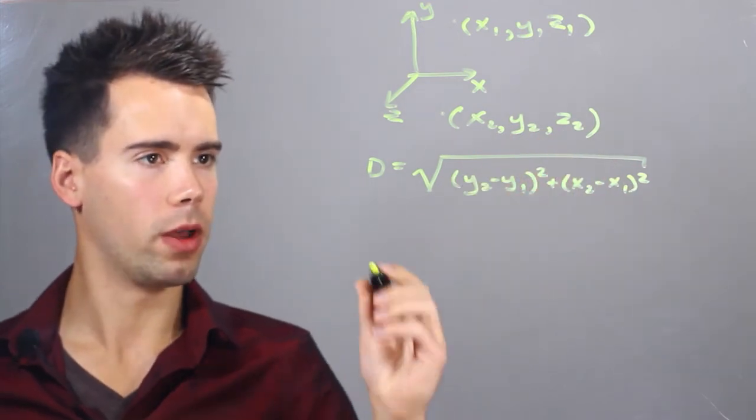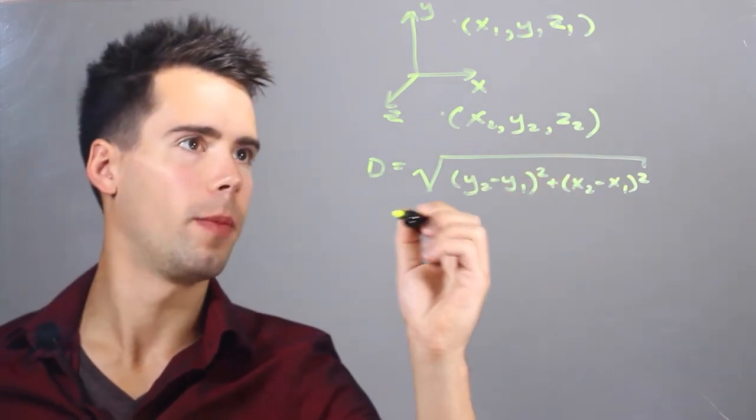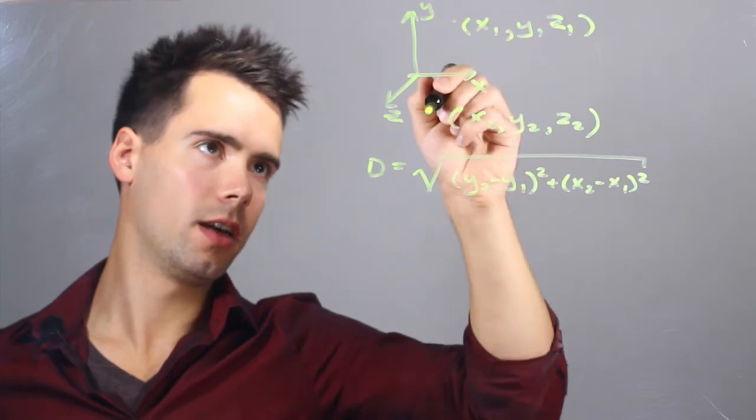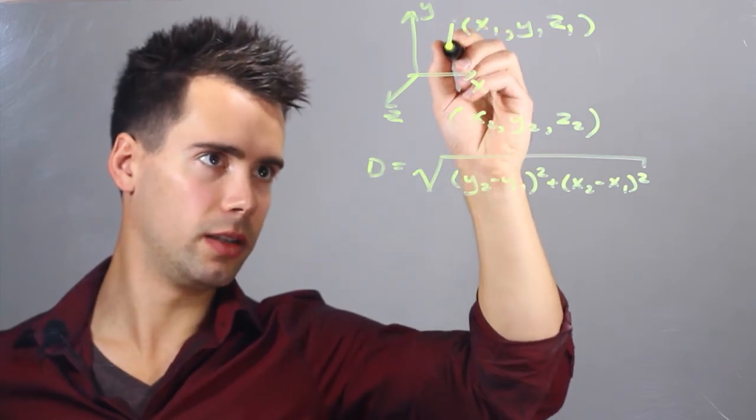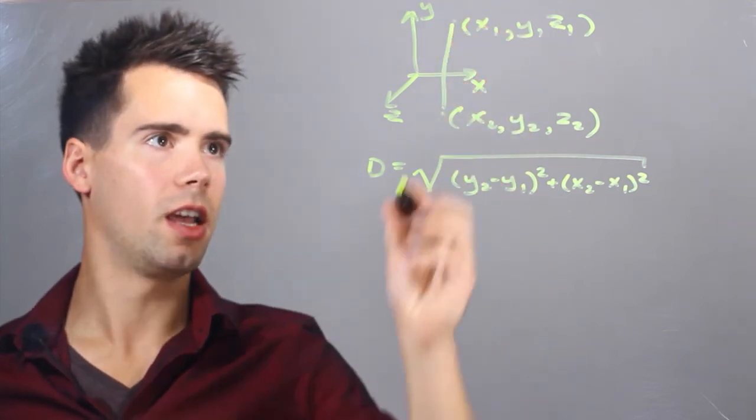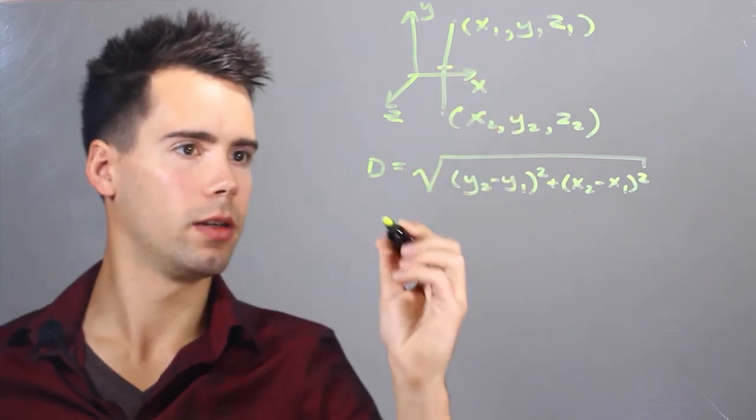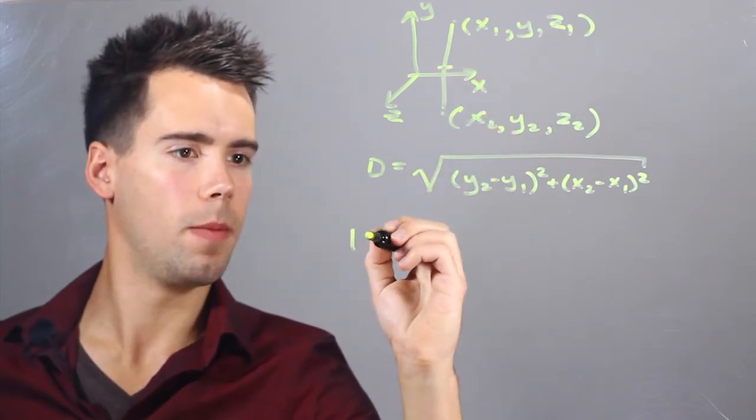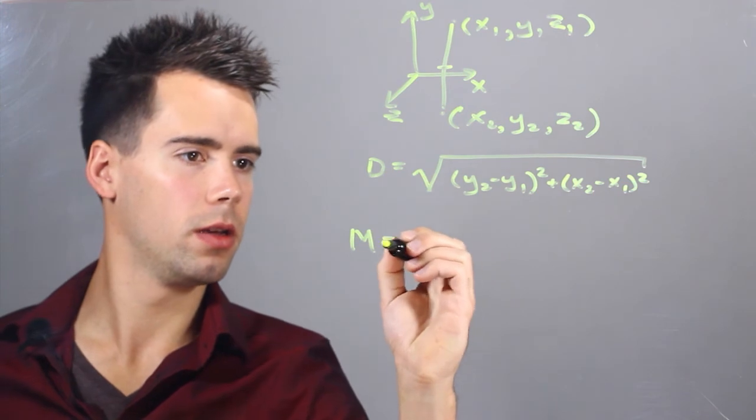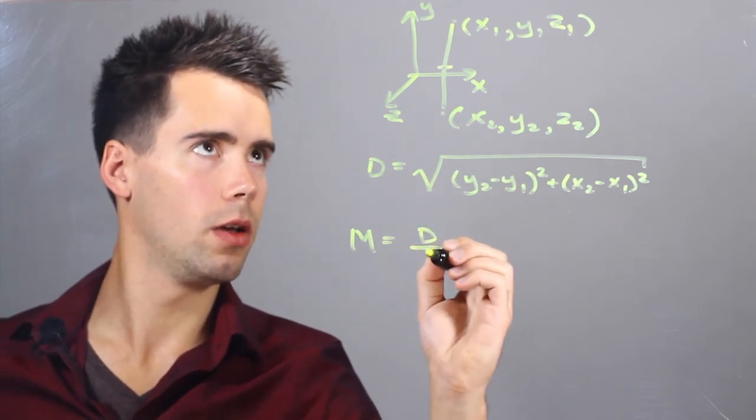And if we want the midpoint, we simply divide the distance divided by 2. Because distance is the amount of space between these two points. And the midpoint is exactly in between. So we can find that m, midpoint, is equal to d over 2.